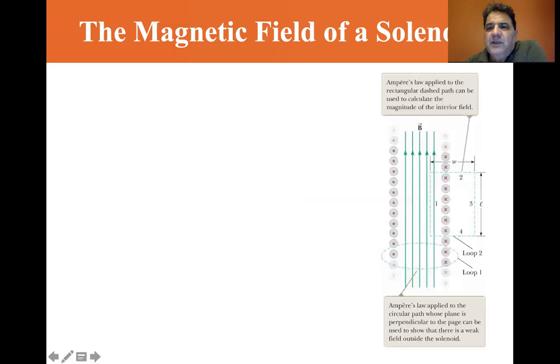We can use Ampere's law. We can use it for two different loops, loop one and loop two. The important one is loop two. Ampere's law applied to the rectangular dash path can be used to calculate the magnitude of the interior field. And Ampere's law applied to the circular path, whose plane is perpendicular to the page, can be used to show that there is a weak field outside the solenoid.